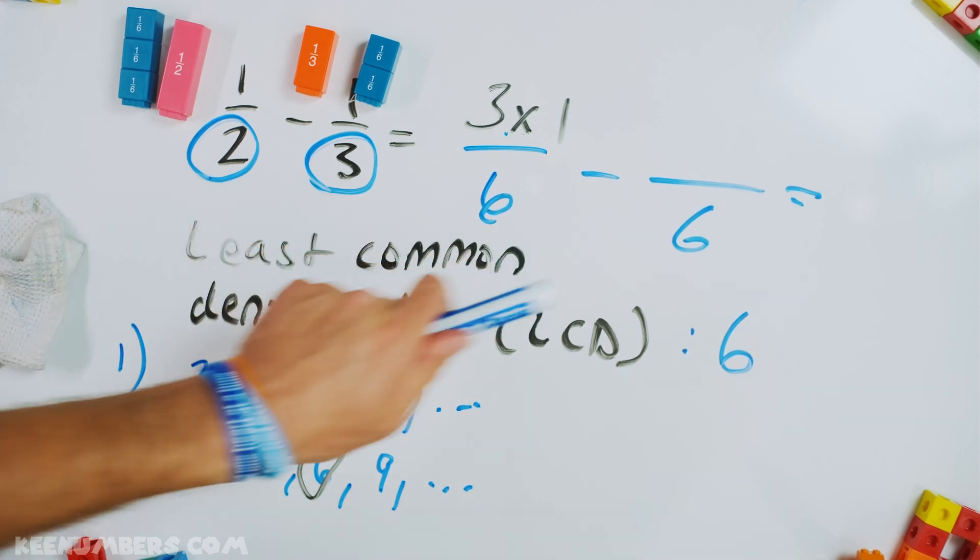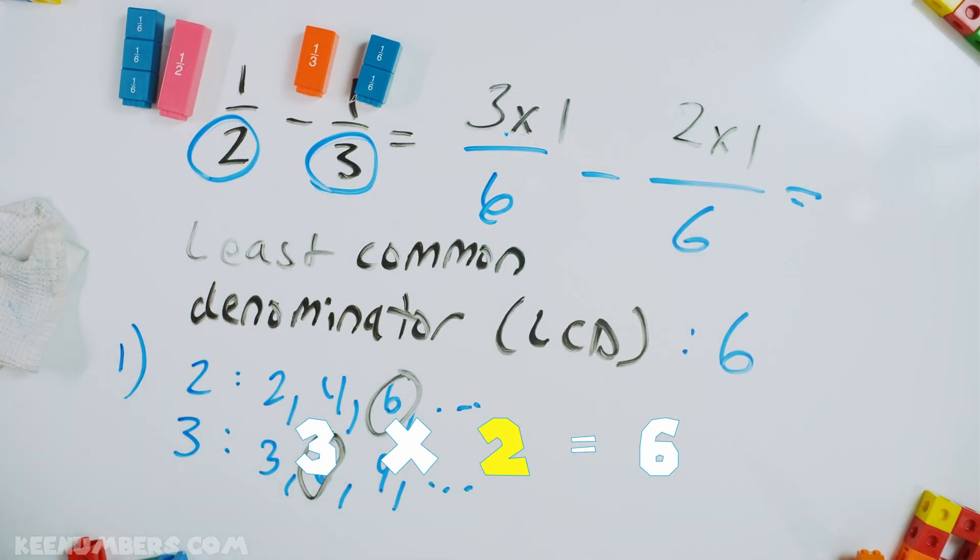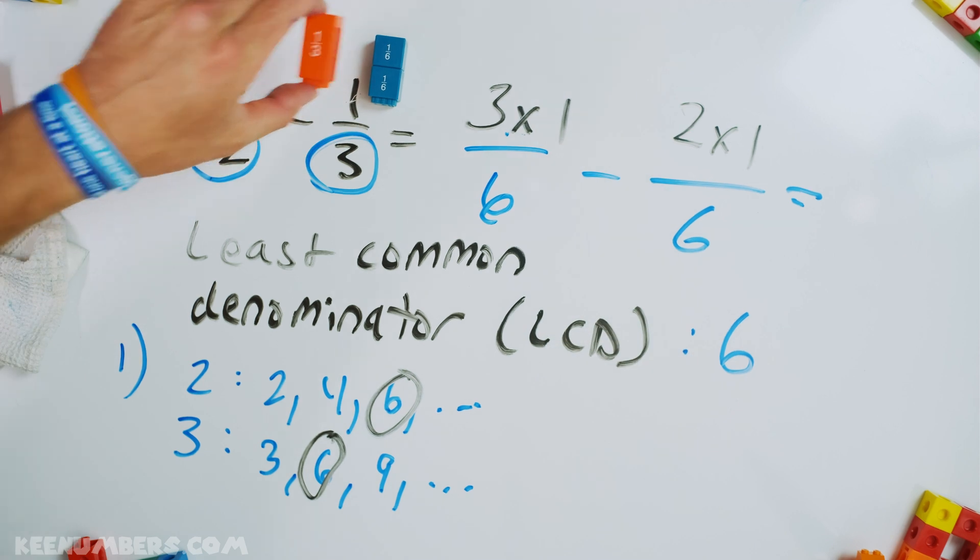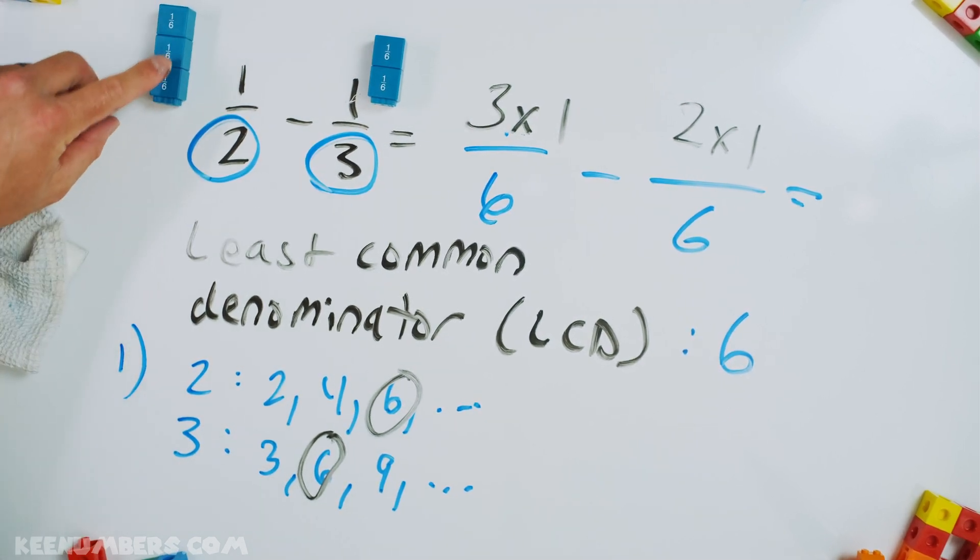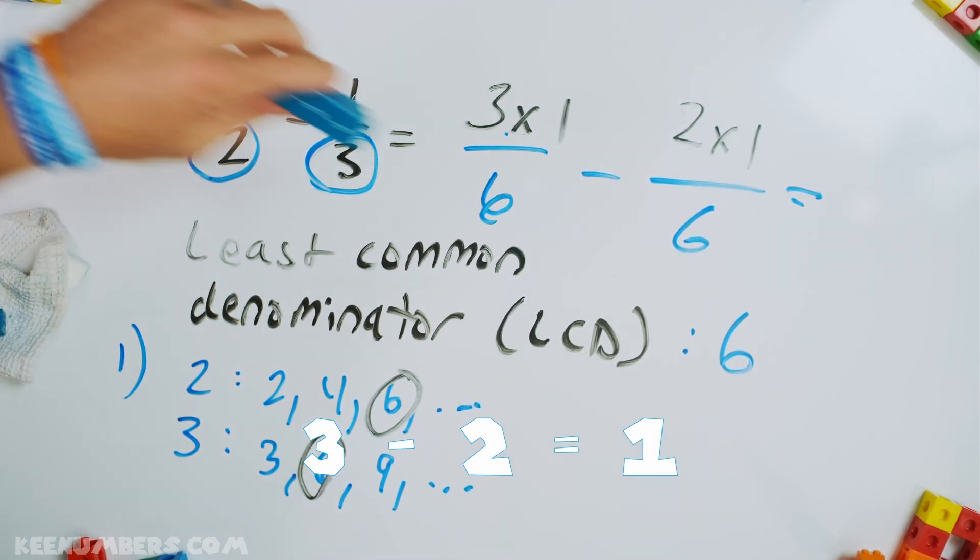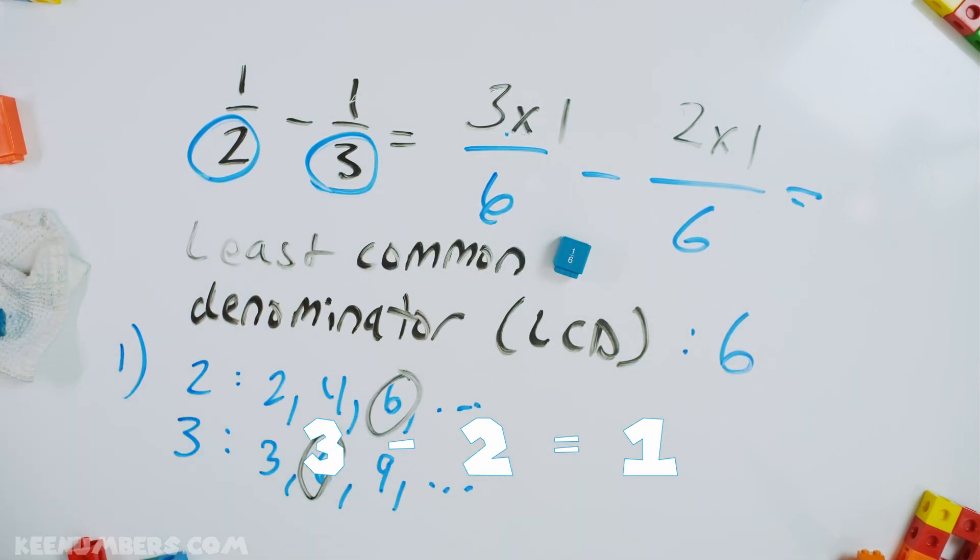Three goes into six two times, so we have two ones over here. We are subtracting now sixths. I have three sixths and I take away two sixths. So if I take away two sixths here, what's left over? One sixth.